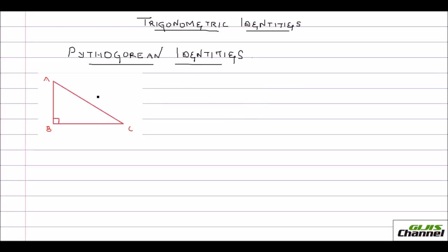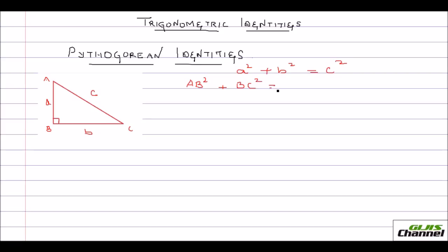The hypotenuse side we normally take as C, this one as A, and here I take it as B. As per the Pythagorean formula, it is A² + B² = C². So here A² is AB², and B² is BC², so BC² equals C², which is AC².